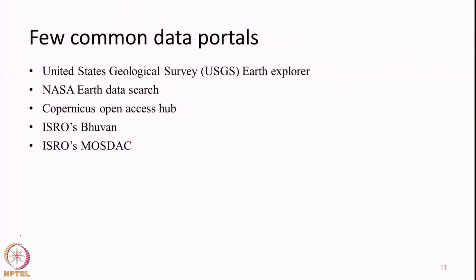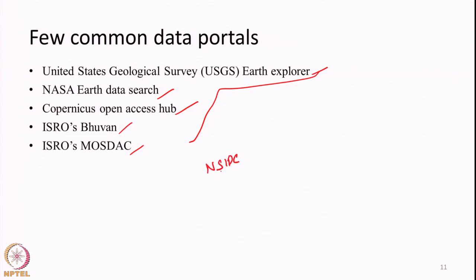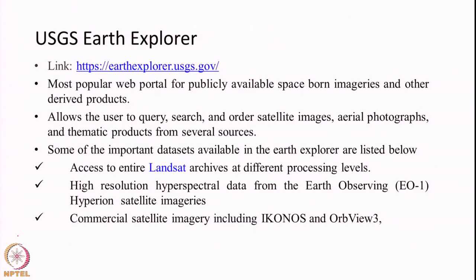We will discuss some of the commonly used data portals: USGS Earth Explorer, NASA Earth Data Search, Copernicus Open Access Hub, ISRO Bhuvan, and ISRO MOSDAC. There are also other portals like NSIDC (National Snow and Ice Data Center) in the USA, which gives access to SMAP and ICESat-2 datasets. We will restrict our discussion to these selected portals. The first is the USGS Earth Explorer, maintained by the United States Geological Survey, at EarthExplorer.usgs.gov.